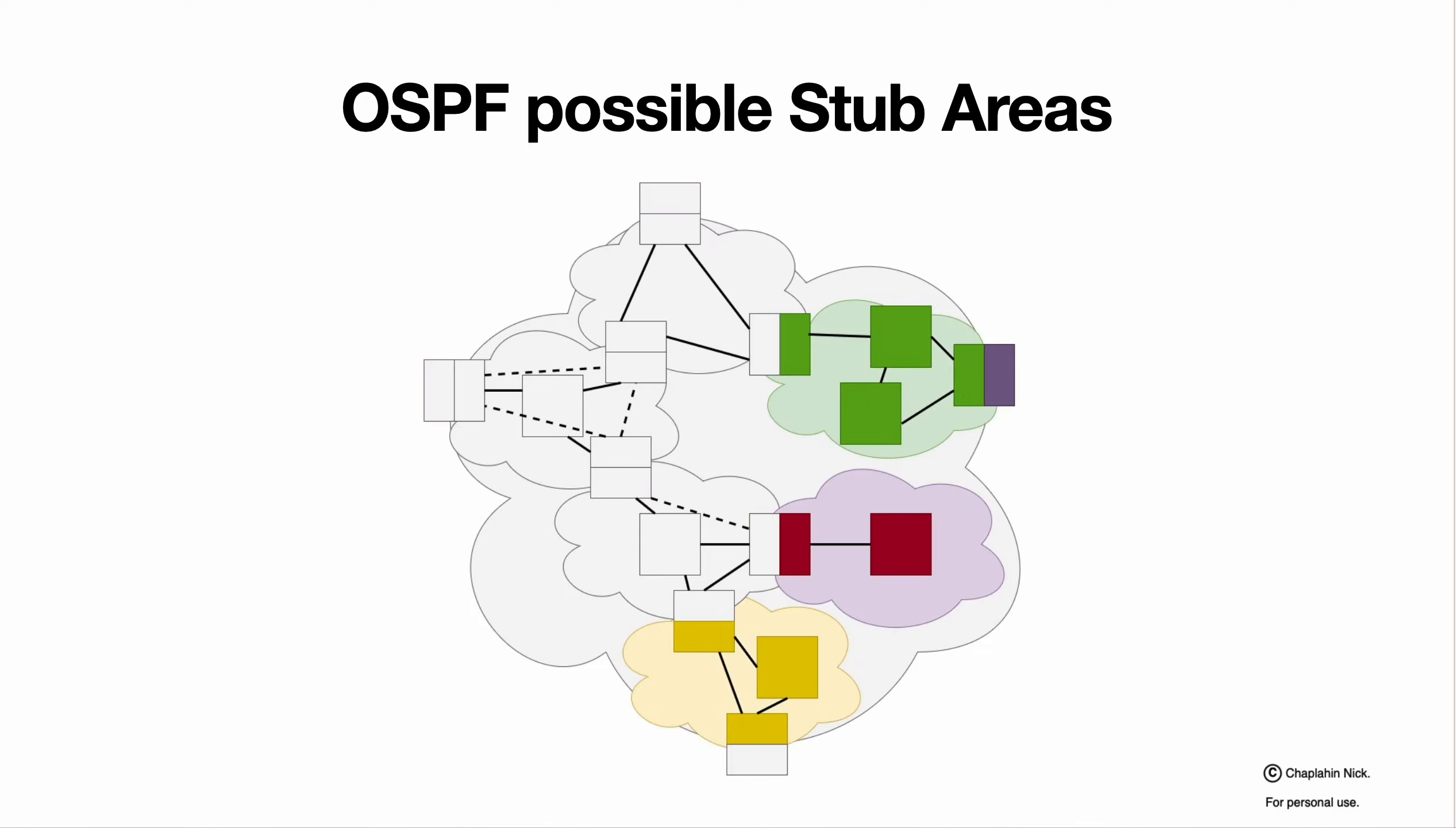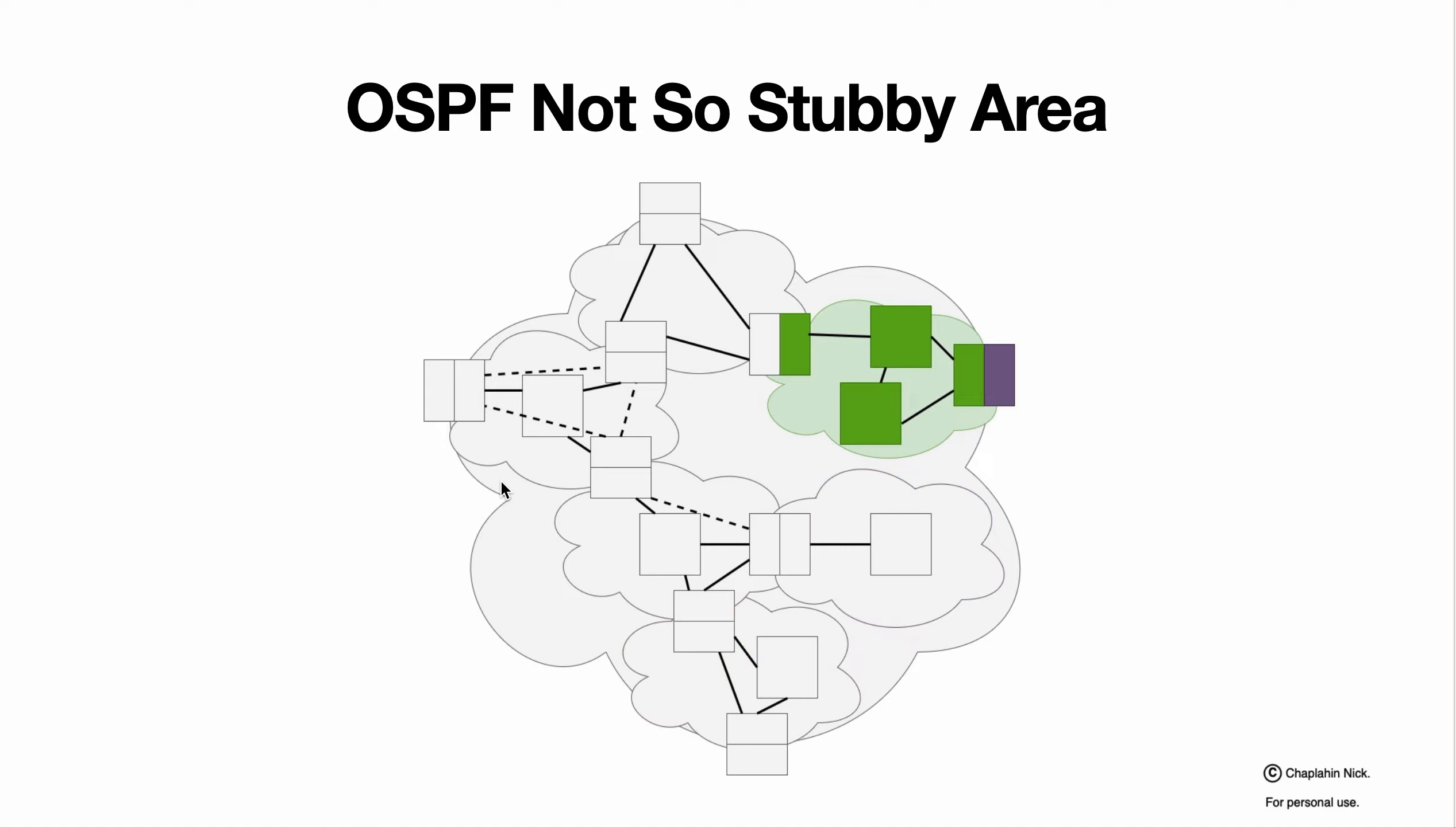And now to the most fancy thing in probably all the routing ever: not so stubby area. Well, stub area is an area that doesn't have transit traffic. Not so stubby area could have some transit traffic, but not that much. And it cannot have just one default router. Some conditions need to be measured before selecting where to route the traffic from not so stubby area.